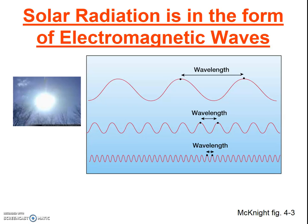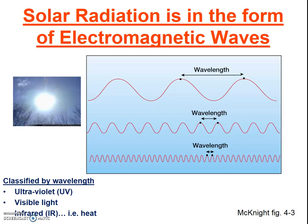Next, some basic physics. Solar radiation from the Sun comes to us in the form of electromagnetic waves. There are many different types of electromagnetic radiation, and the types are classified by their wavelength. Ultraviolet waves have a shorter wavelength than visible light, and infrared have a longer wavelength than visible light.